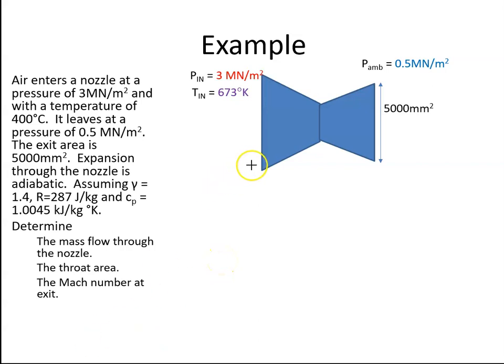We'll assume this is station 1 and this is station 2, and we'll calculate the temperature at the exit. Using the formula, we rearrange it to get T₂. Plug in the values: T₁ is 673, P₂ is 0.5, P₁ is 3, and that gives us a temperature of 403 K.